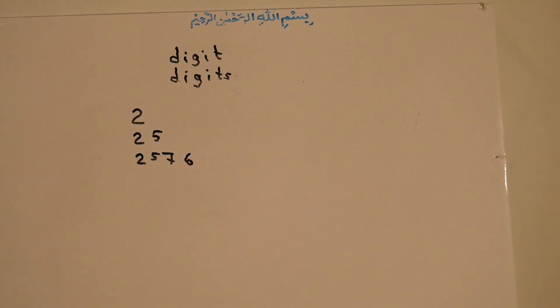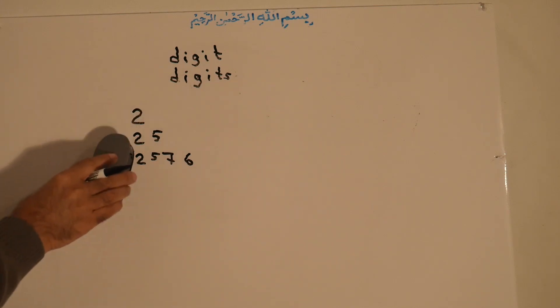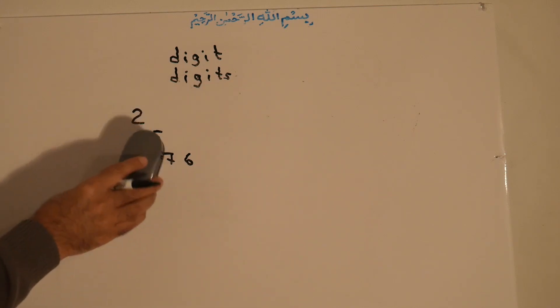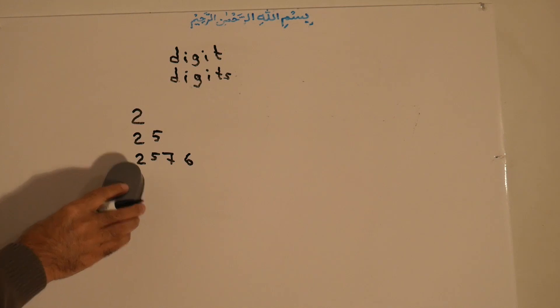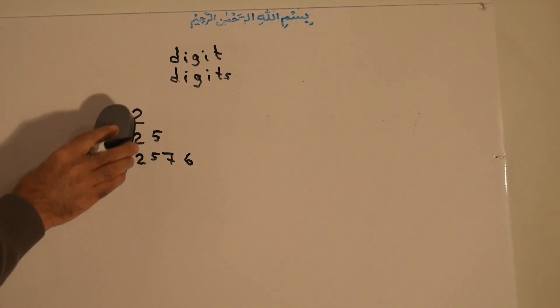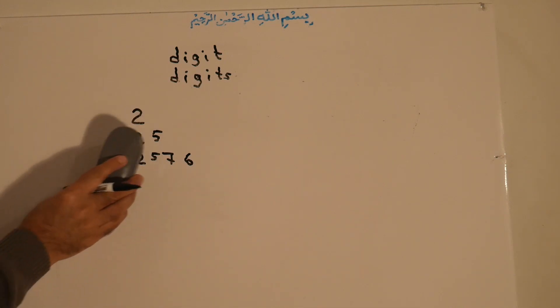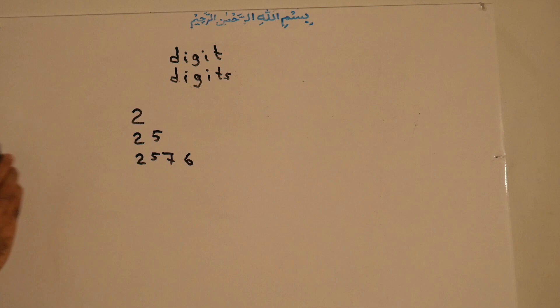Numbers can be ten digits, hundred digits, a lot of digits. We say one digit, two digits, three digits, four digits, and so on.